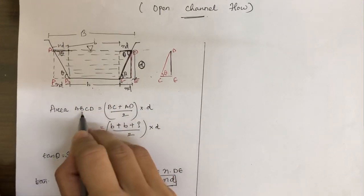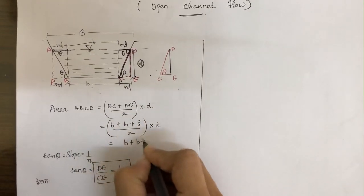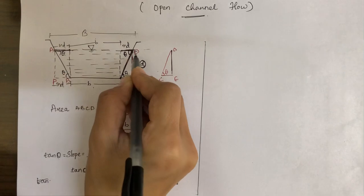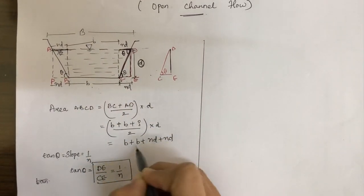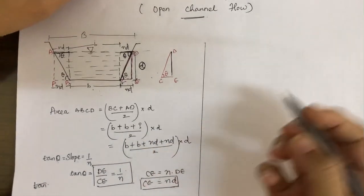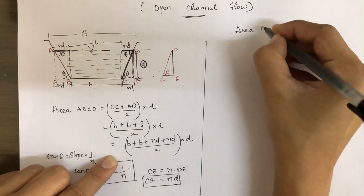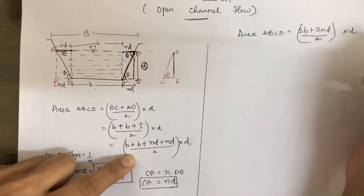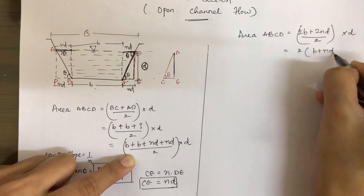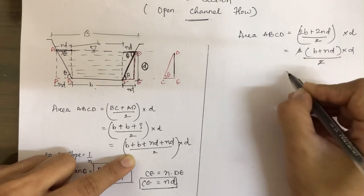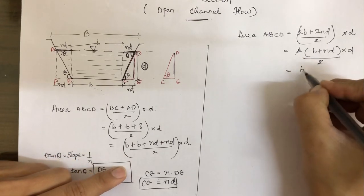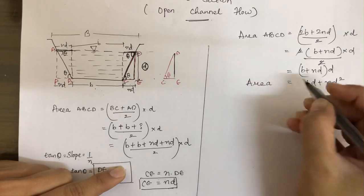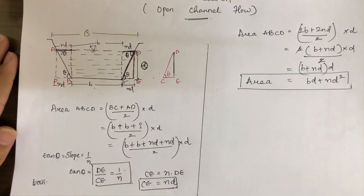Substituting CE = nd into our equation, the top width AD equals b + nd + nd. So the area becomes (b + b + 2nd) / 2 × d, which simplifies to (2b + 2nd) / 2 × d. The twos cancel, giving the area A = (b + nd) × d, or equivalently A = bd + nd².